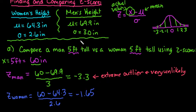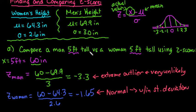Which means that a man that is 5 foot tall is much more uncommon than a woman that is 5 foot tall. Negative 1.65, since this is about right here, it's within 2 standard deviations of the mean, so this is considered normal, since it's within 2 standard deviations. So it's very, very common to see a woman that is 5 feet tall, versus seeing a man that is 5 feet tall.